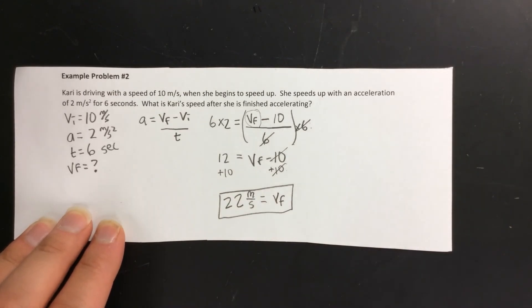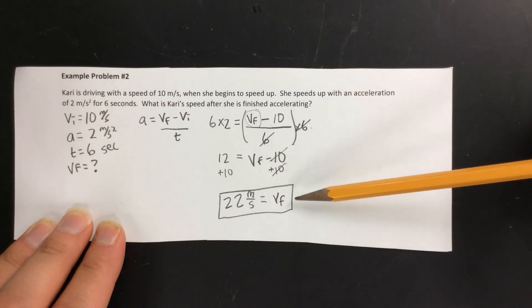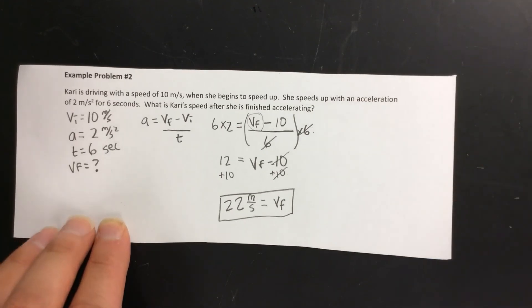And there you have it. You notice it's the same steps of showing work that we've done with every other word problem that we've had. The only thing that makes it different is this bit of algebra you have to do over here in order to solve for VF. Hope this helps. Thank you.